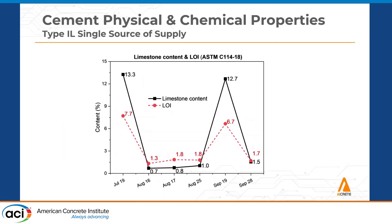Here we have an illustration of the limestone content and the LOI. Kind of where you saw with the specific gravity — same samples, same dates — just showing the variance as far as the limestone percentages. This specific supplier had a target of 13% limestone percentage in their 1L, but you can see it's actually down to less than 1%, which is in your type 1-2 range.